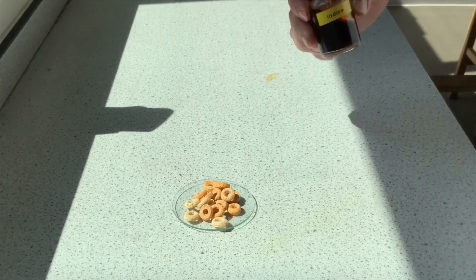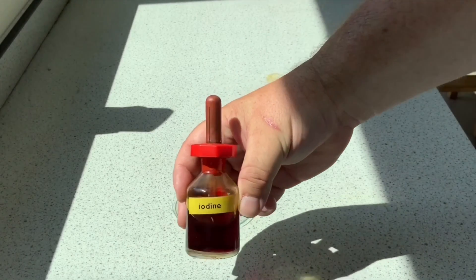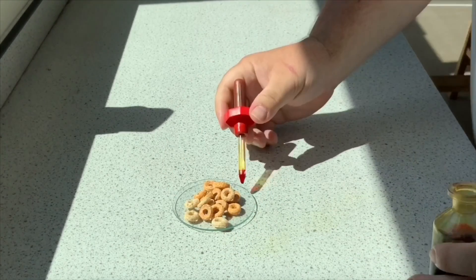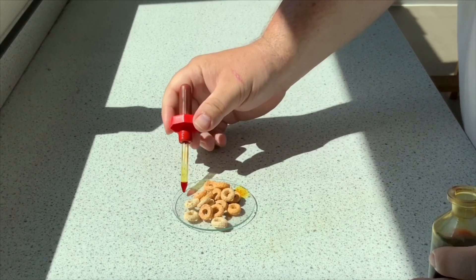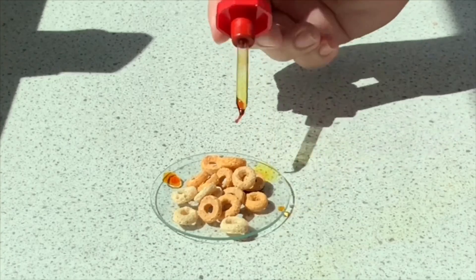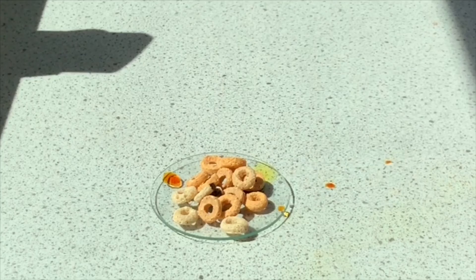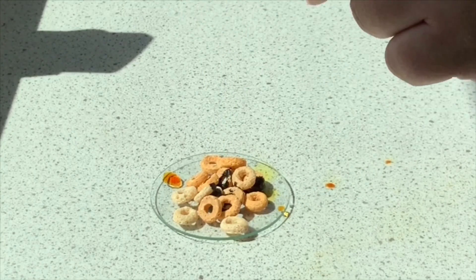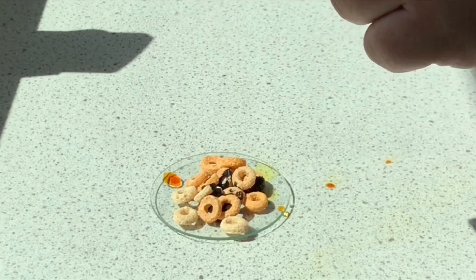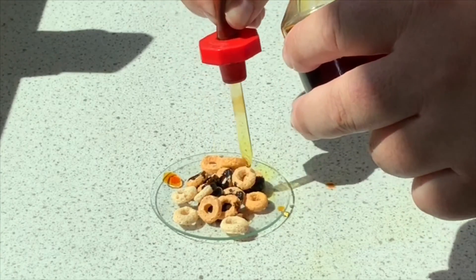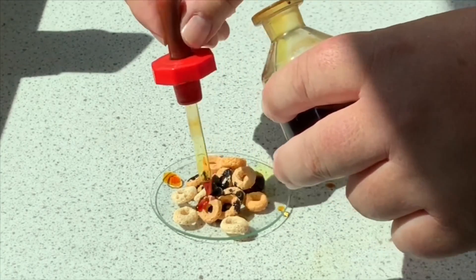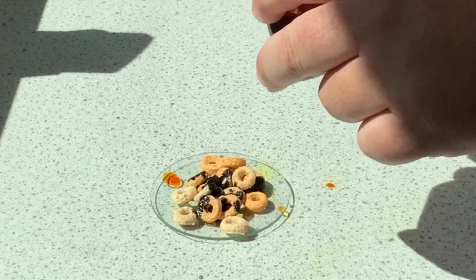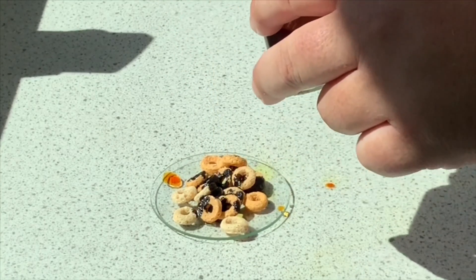First of all, we're going to test for starch using iodine. I've got some cereal here and some iodine. Iodine, when we look at its original color, is like an orangey brown color, and when starch is present we can see the color change to a dark blue-black color. Normally we carry this out in a test tube where we crush up the food first, then put a few drops on, but this experiment illustrates it perfectly well.